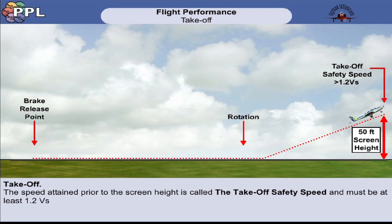A specific speed needs to be gained before the screen height. This is called the take-off safety speed and it must be at least 20% more than the stalling speed of the aircraft — in other words, more than 1.2 Vs. This speed is called V2 in large twin engine aircraft.